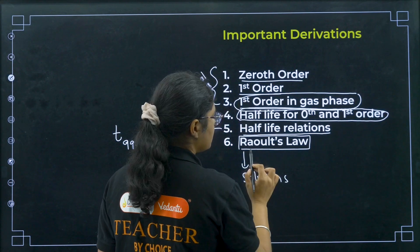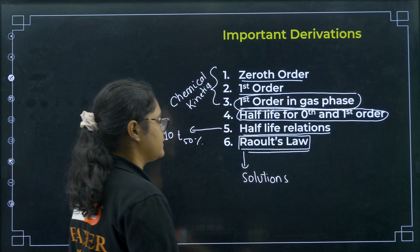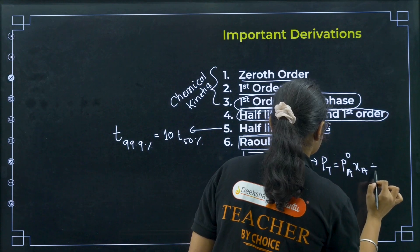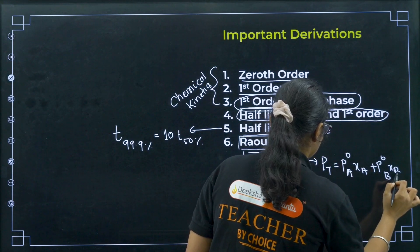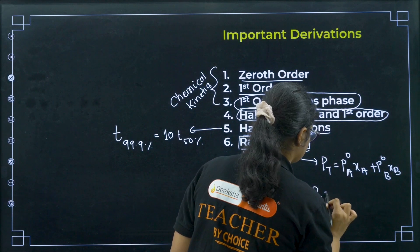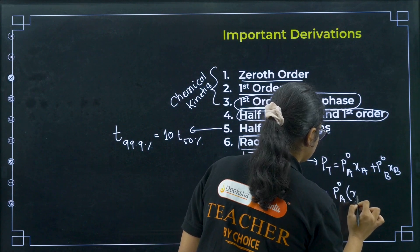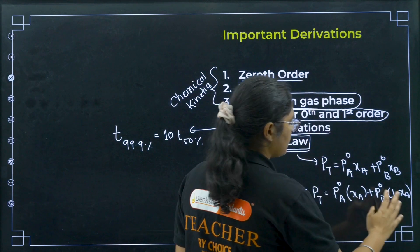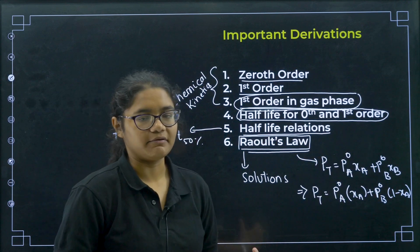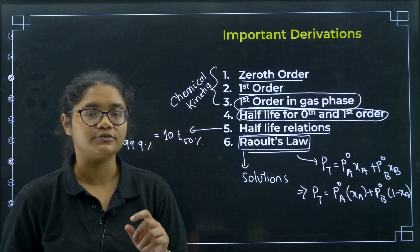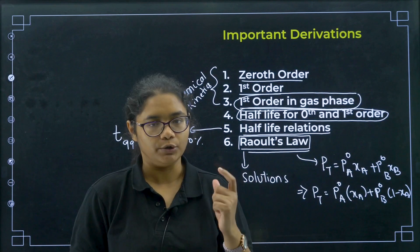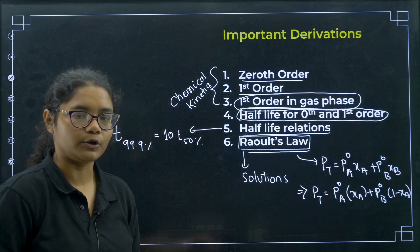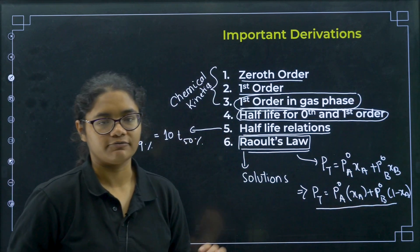One of those chemical kinetics derivations will definitely be asked, so prepare accordingly. From the solutions chapter, derive Raoult's law: P_total = P°_A·X_A + P°_B·X_B. You can write P_total = P°_A·X_A + P°_B·(1 − X_A), multiply through and derive it. The question may ask you to derive Raoult's law in terms of one solute or in terms of X_A only — either in terms of solvent or solute.